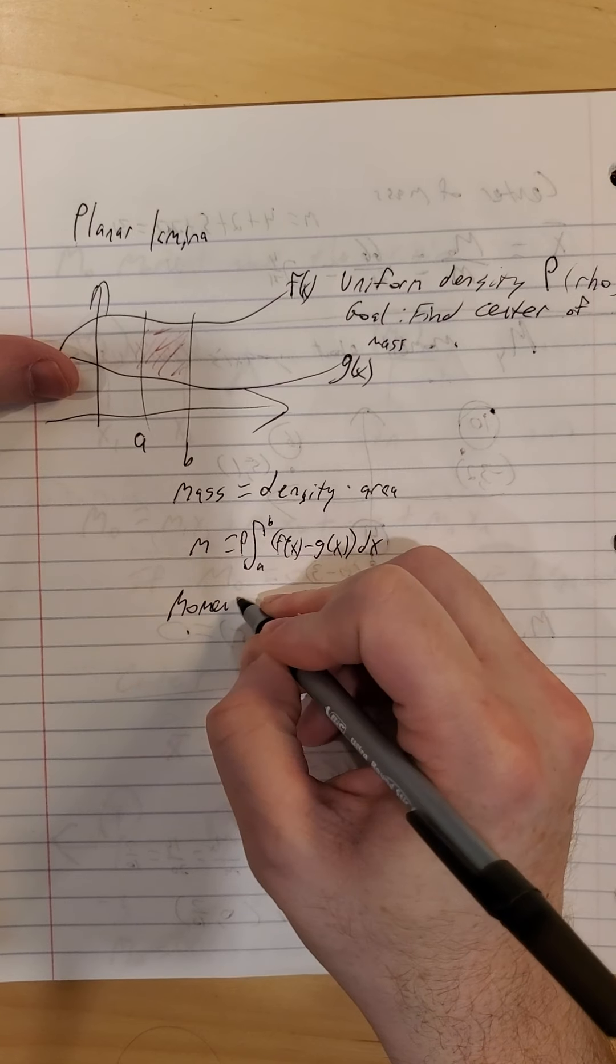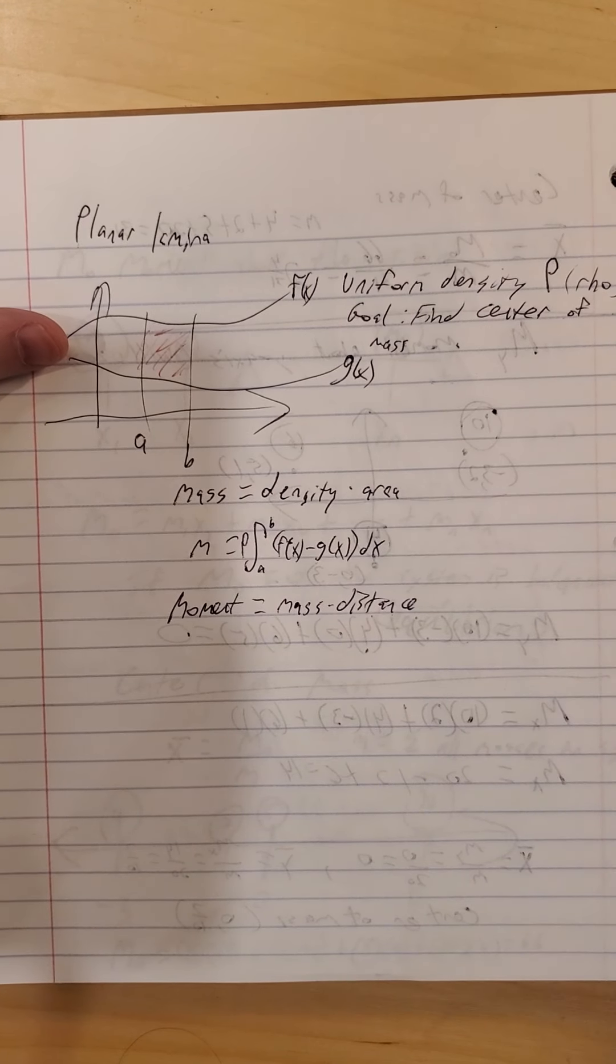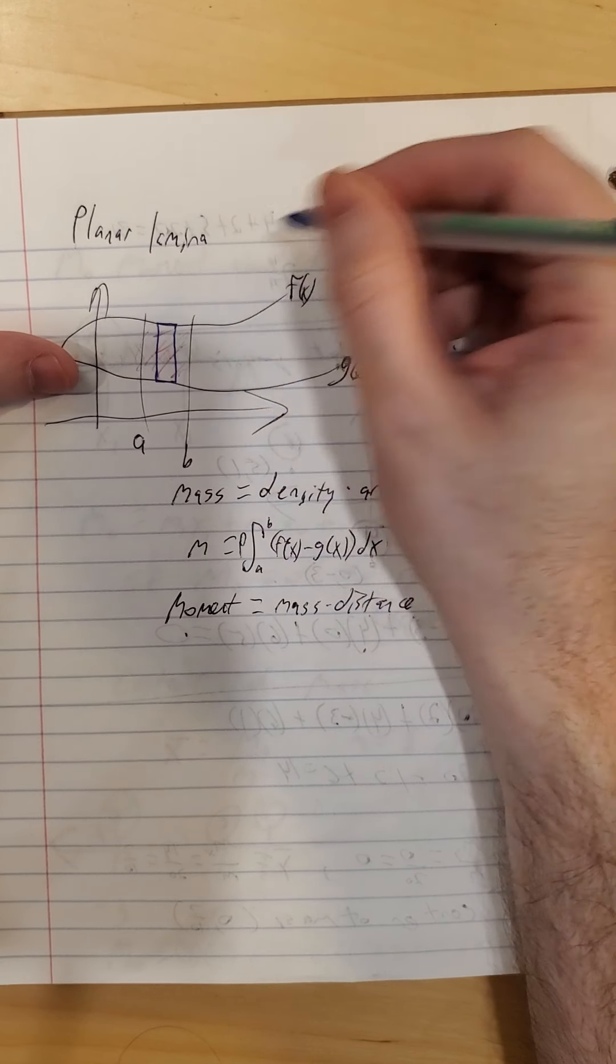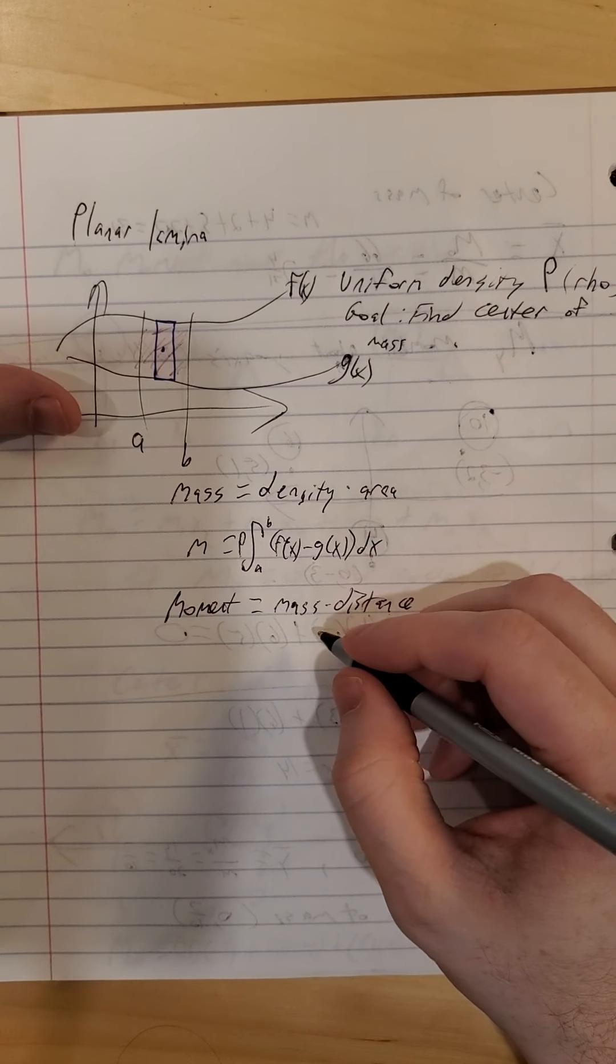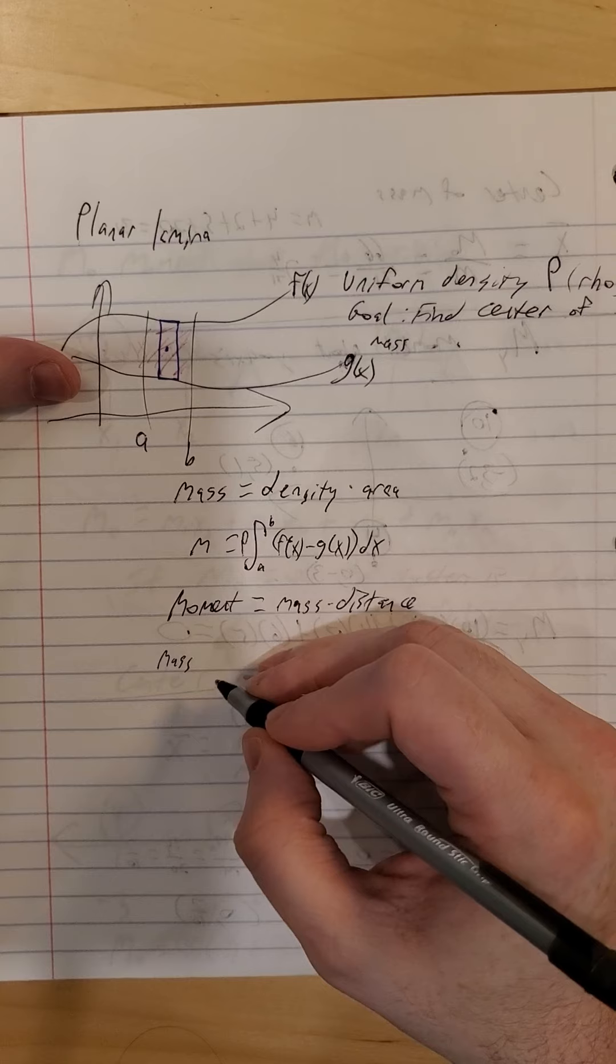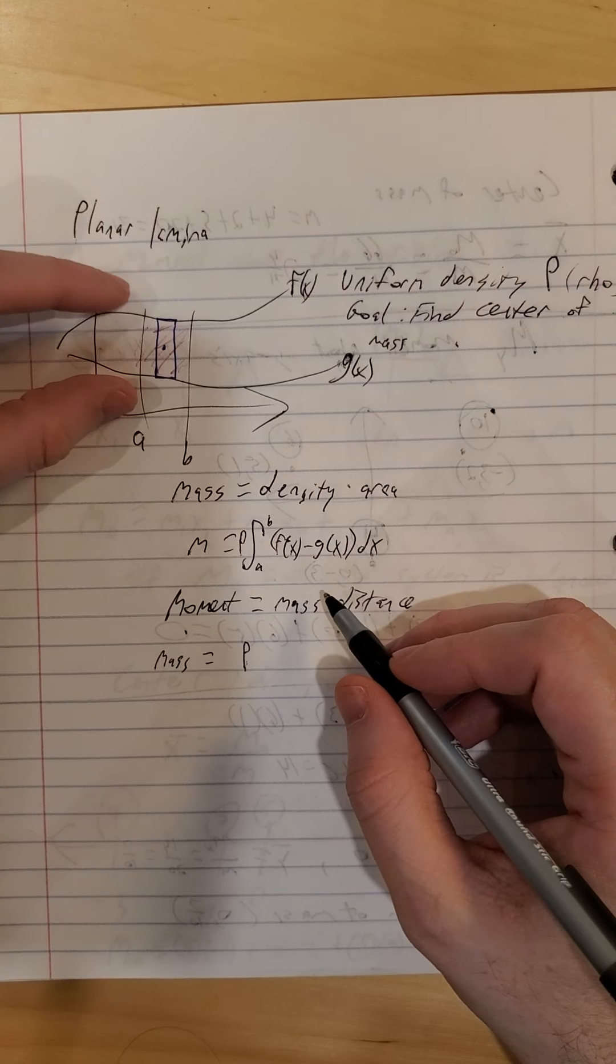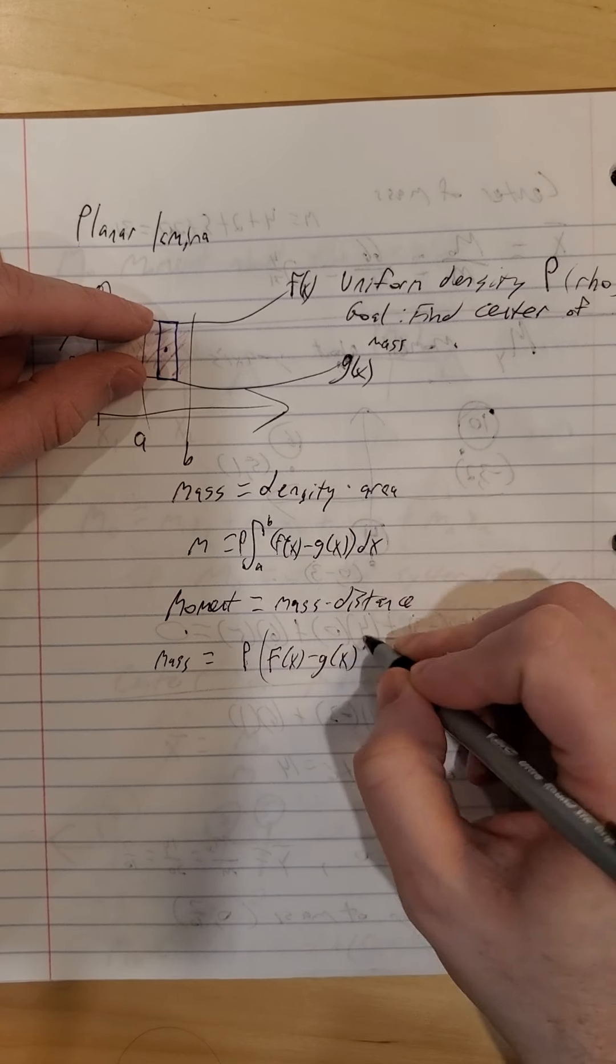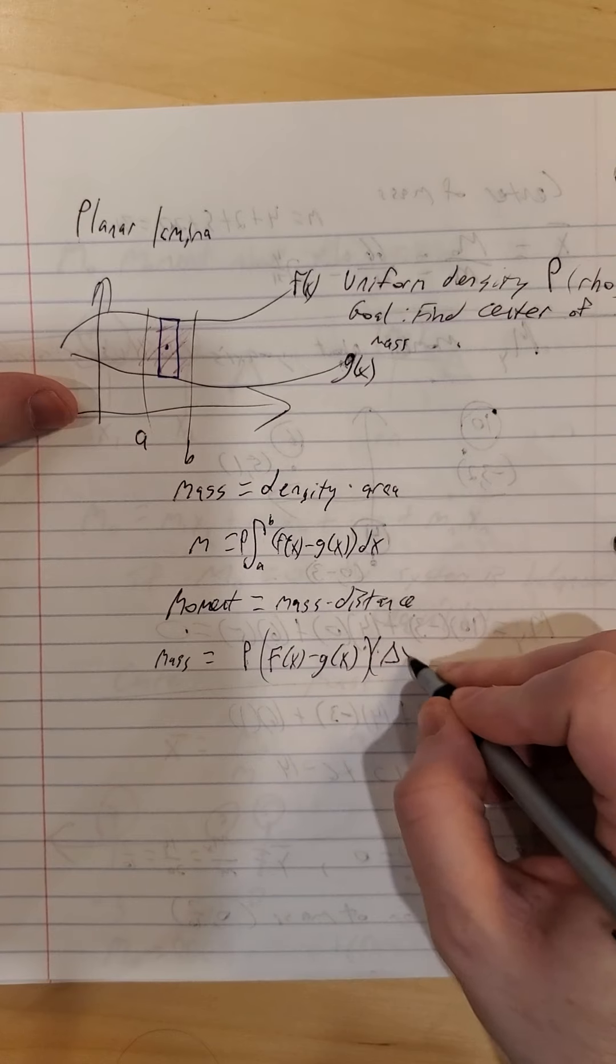Recall also that the moment is mass times distance. So for this, we're going to consider putting a little rectangle inside of our area. And we're going to consider a dot in the middle of our rectangle as well. So for a rectangle, the mass, density is rho. And our area for a rectangle here, the f of x minus g of x, that's the height of our rectangle times the width of the rectangle, the rectangle being delta x.